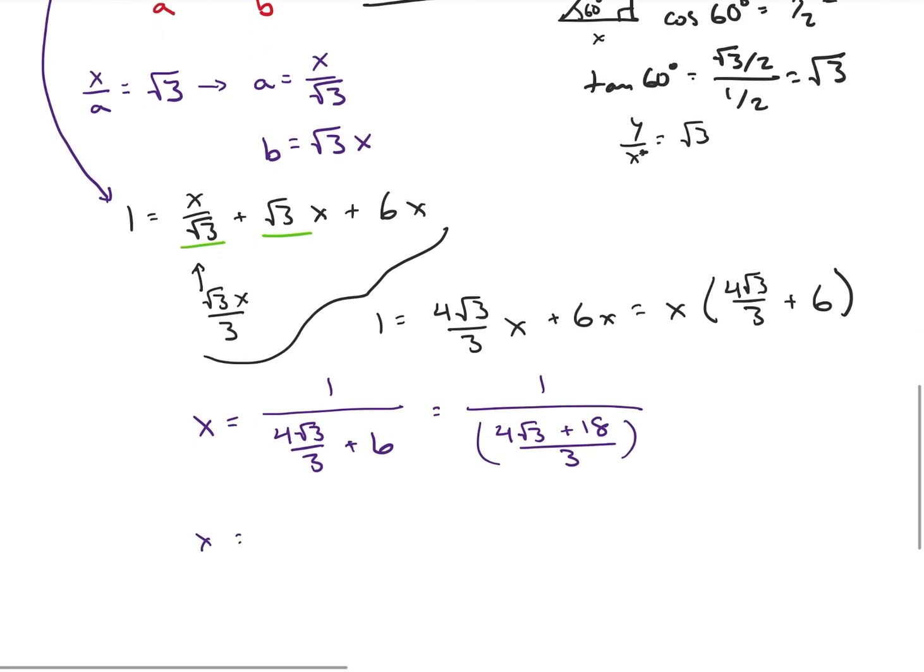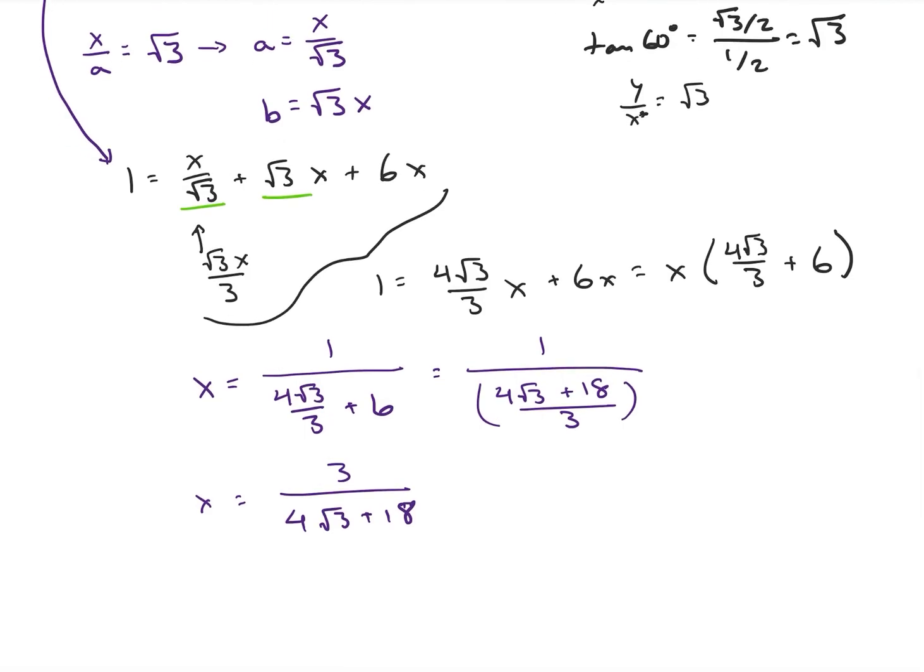So I'm going to rewrite this as 1 over 4 root 3 plus 18 over 3. So this is going to be x is equal to 3 over 4 root 3 plus 18. You might want to get your radicals out of the denominator. If you do, how do we do that? So we can multiply the top and the bottom by 4 root 3 minus 18.